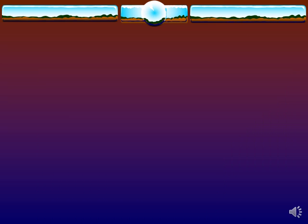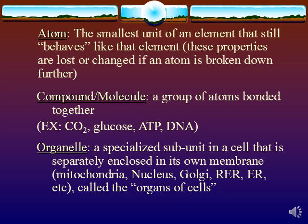We start small, so first up: the atom. An atom is the smallest unit of an element that still behaves like that element. If you're talking about an atom of iron, it still conducts heat like iron and is still magnetic like iron, but these properties are lost or changed if the atom is broken down further into its protons, neutrons, and electrons. Whereas a compound, which is slightly larger, is a group of atoms bonded together — this also includes molecules. Examples include CO2, glucose, ATP, and of course DNA.